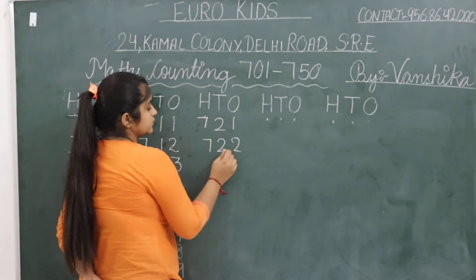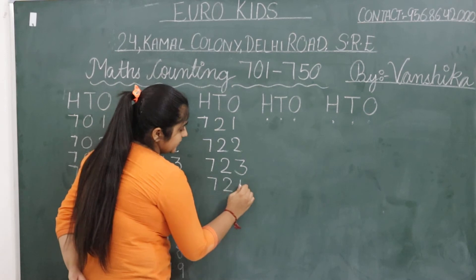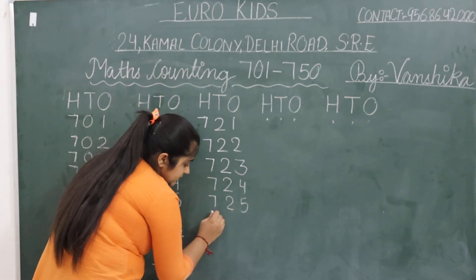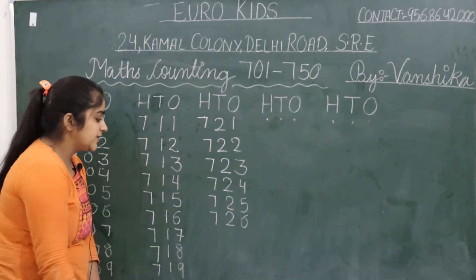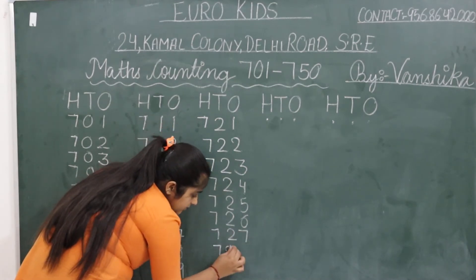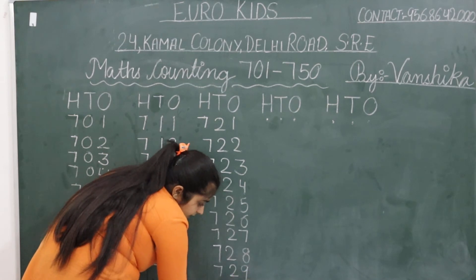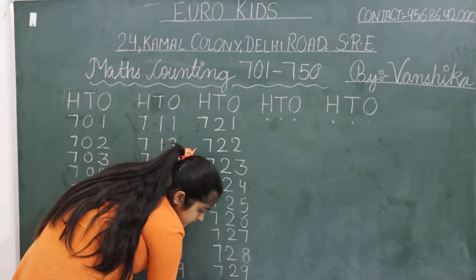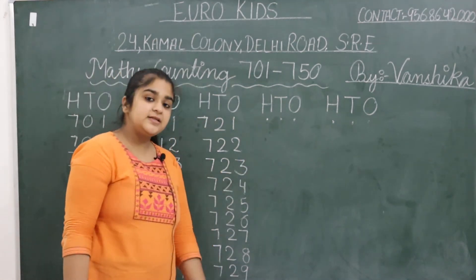722, 723, 724, 725, 726. Keep writing like this in nice handwriting. 727, 728, 729. And what comes last? Your 7 stays as it is, and after 29 comes 30. Understood?